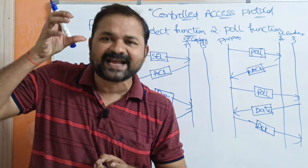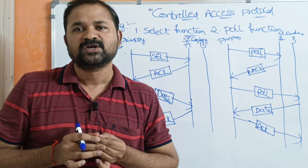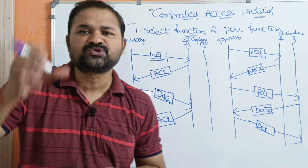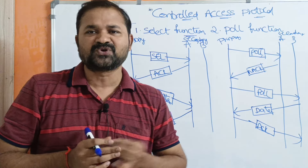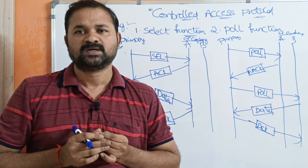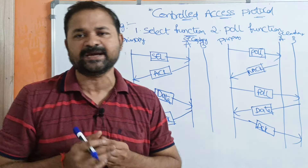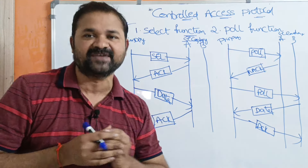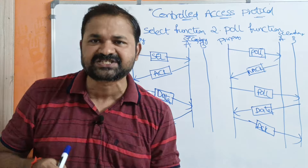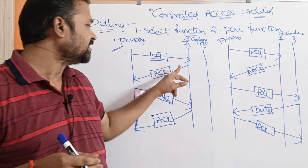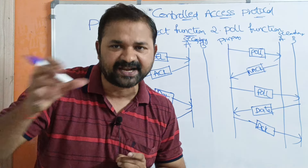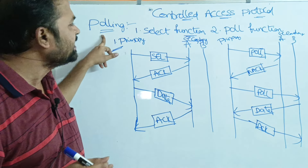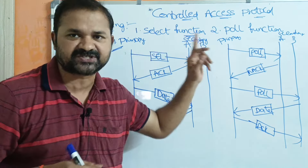It is the responsibility of the primary device to decide which secondary device gets to use the channel. Since we have a shared medium, the decision of which secondary device will use the channel must be taken by the primary device.